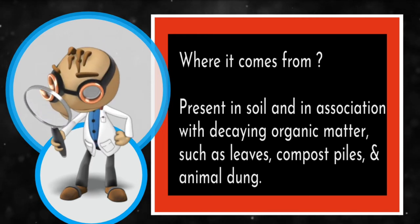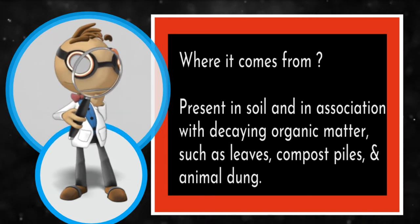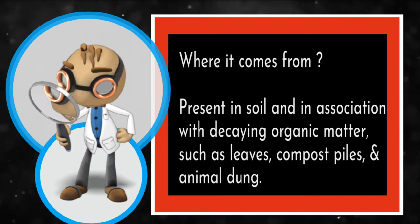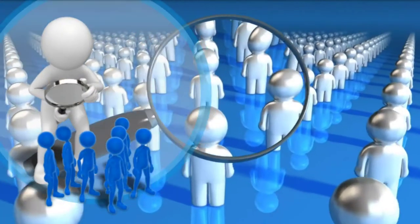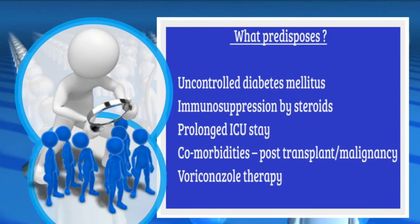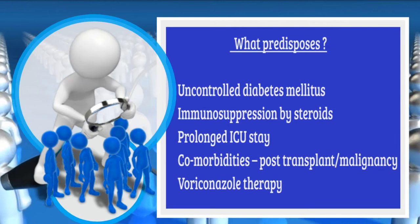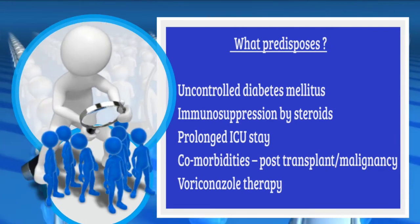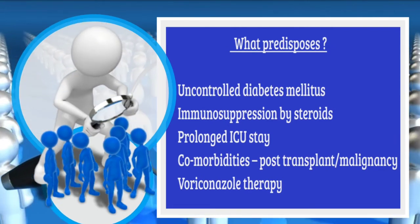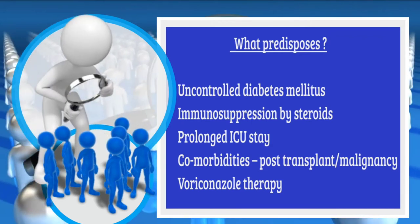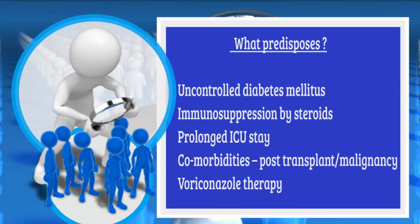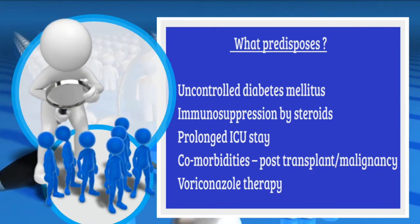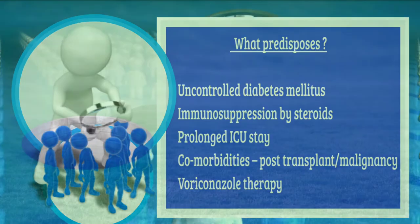Mucormycosis is present throughout the environment, particularly in soil and in association with decaying organic matter such as leaves, compost piles, and animal dung. Predisposing factors include uncontrolled diabetes mellitus, immunosuppression by steroids, and prolonged ICU stay.